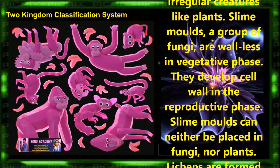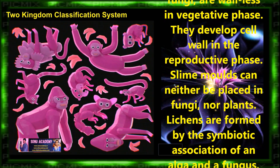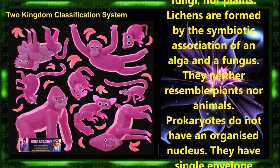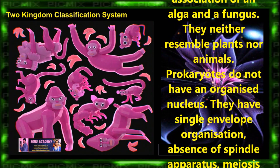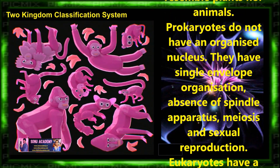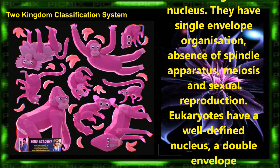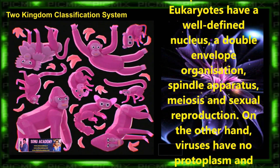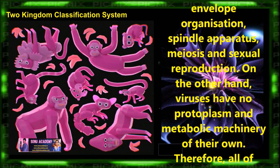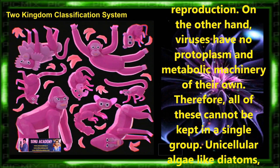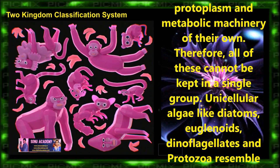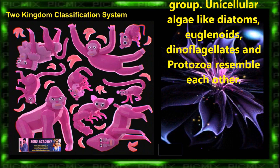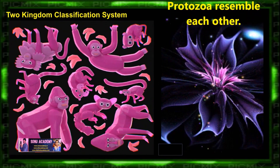Slime moulds, a group of fungi, are wall-less in the vegetative phase and develop cell wall in the reproductive phase. Slime moulds can neither be placed in fungi nor plants. Lichens are formed by the symbiotic association of an alga and a fungus; they neither resemble plants nor animals. Prokaryotes do not have an organized nucleus — they have a single envelope organization and absence of spindle apparatus, meiosis and sexual reproduction. Viruses have no protoplasm and metabolic machinery of their own, so all of these cannot be kept in a single group. Unicellular algae like diatoms, euglenoids, dinoflagellates and protozoa resemble each other. These are the main objections to the two kingdom classification system.